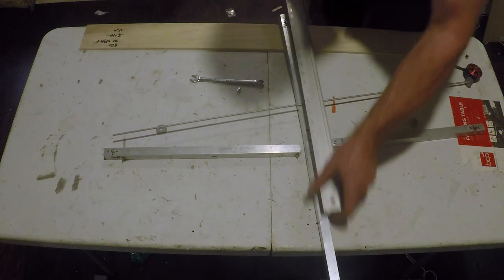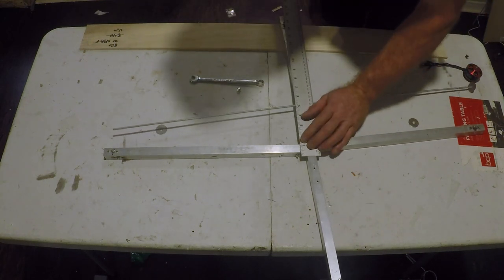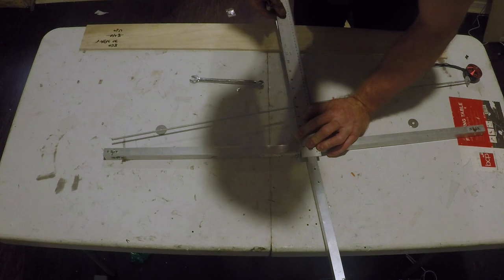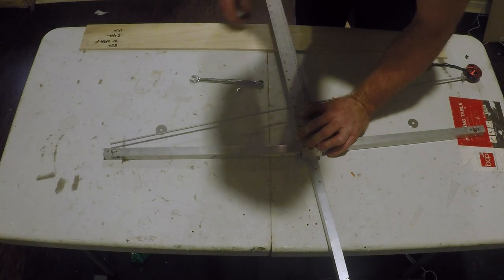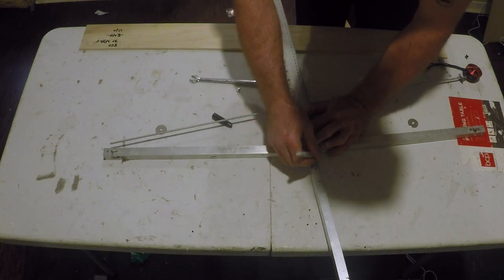So another trick I do is I just mark a line right on the center point of the hole we drilled so I can kind of eyeball what's going to be straight whenever we tension the all thread.